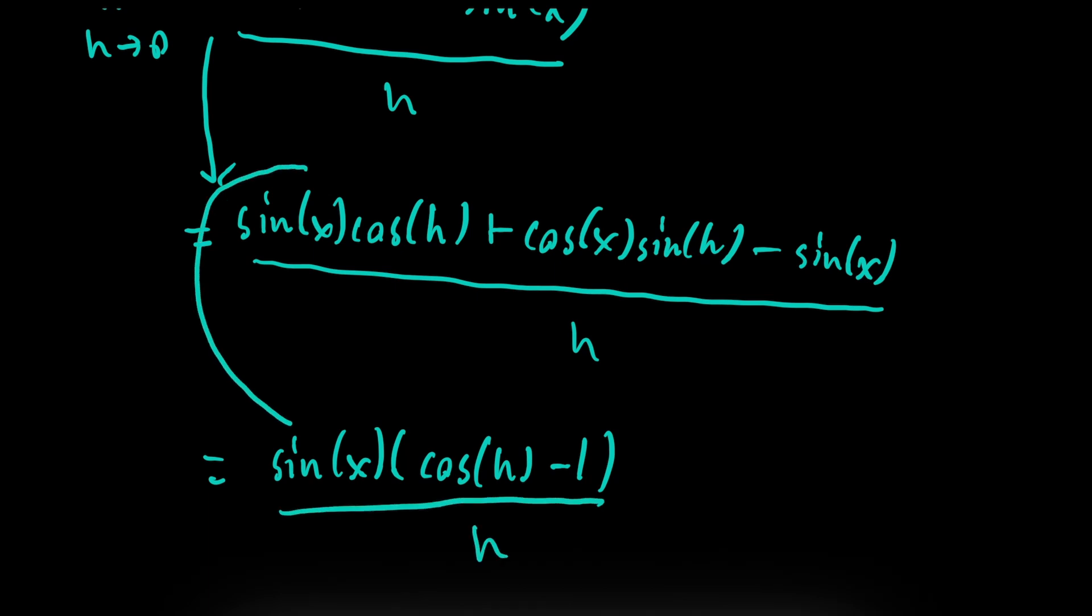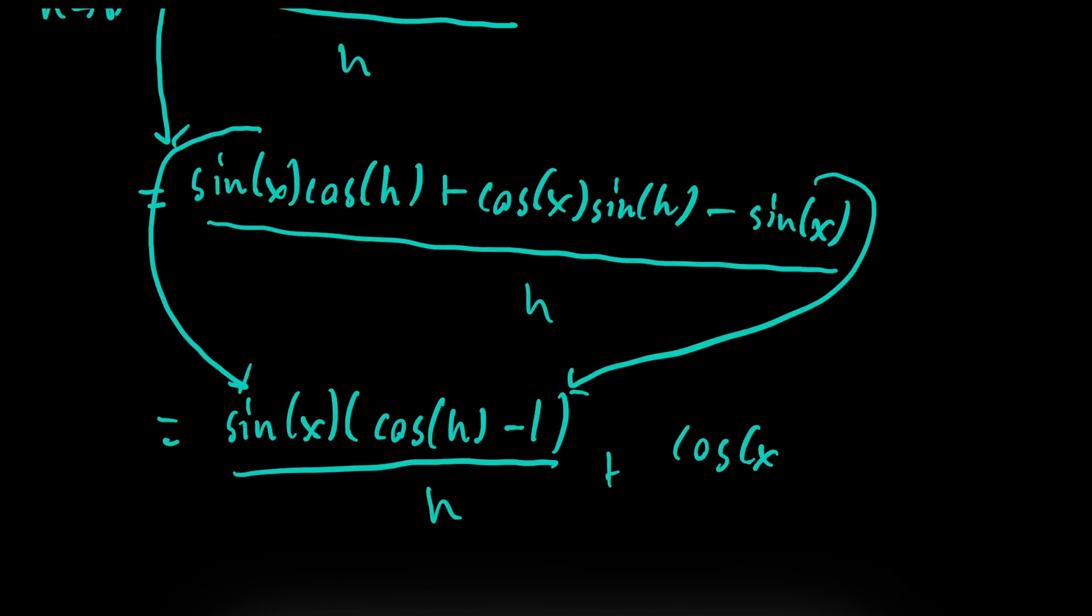This is just coming from this expression here. And this expression, we're just factoring out that sine of x plus cosine of x times sine of h over h.